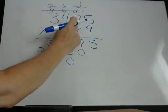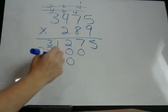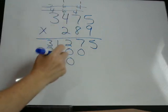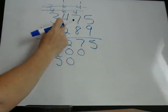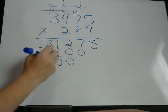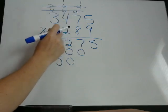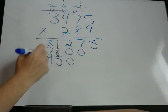2 times 7 is 14, plus 1 is 15. 15. 2 times 4 is 8, plus 1 is 9. 2 times 3 is 6.